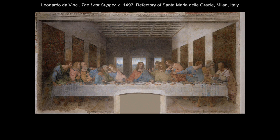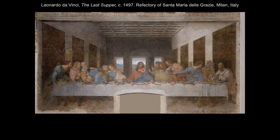Da Vinci painted his famous Last Supper on the wall of the dining hall at the monastery of Santa Maria da Grazie in Milan between 1495 and 1498. In this careful stage-like composition, Da Vinci seemingly extends the dining hall with a fictitious space characterized by a coffered ceiling and four pairs of tapestries along the walls. The space converges along the diagonals of the tapestries towards the vanishing point that is directly behind Jesus's head, making him the visual and symbolic center point of the composition.